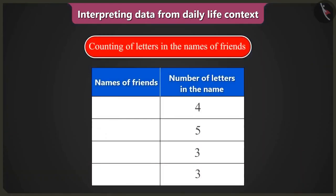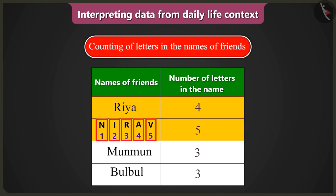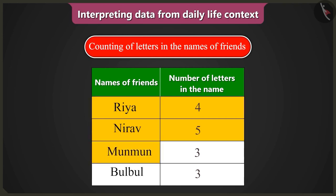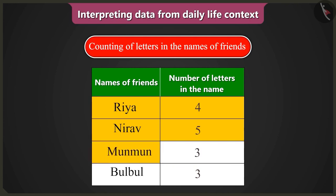How is that? Look Bubbly, here the first name is Riya, which is made from four letters, and you have written four — that is correct. The second name is Nirav, which is made from five letters — also correct. Now the third name is Munmun. There are not three, but six letters in it. You counted M, U and N in Munmun, so you wrote three letters, but these three letters come two times, making a total of six letters.